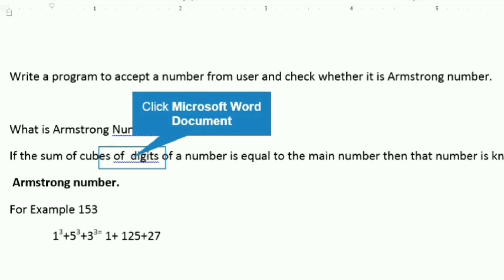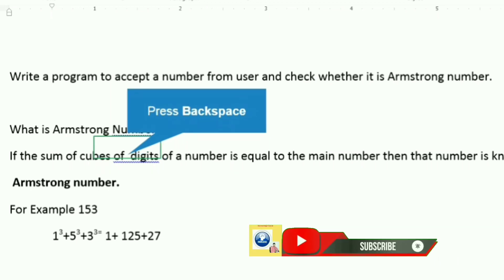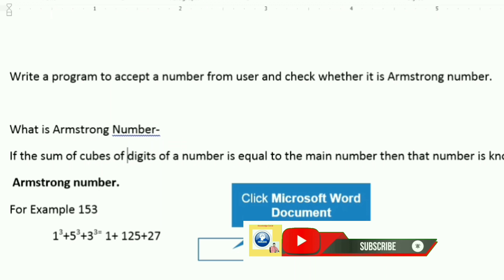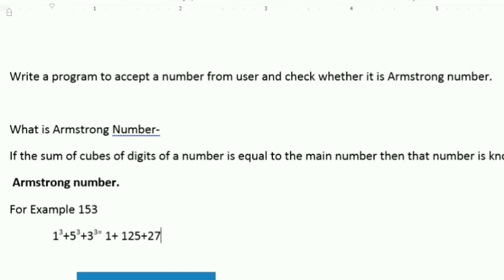If you calculate the cube of each digit — 1 cubed, 5 cubed, and 3 cubed — and add all those cubes together, you get the same number again: 153. So these kinds of numbers are called Armstrong numbers.